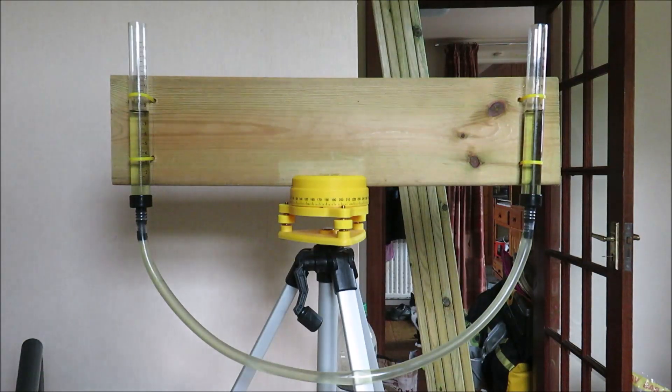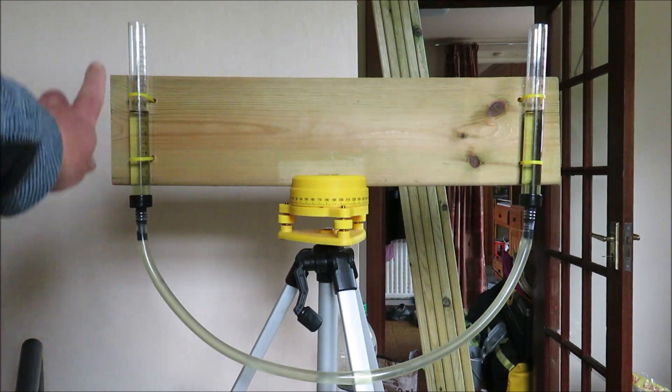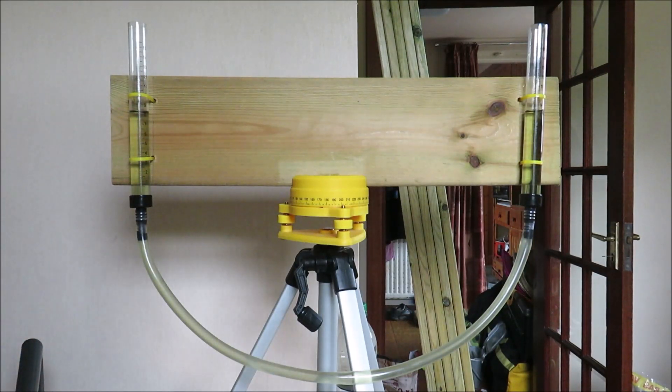Now this is a well known observation and the gravity deniers, flat earthers will claim that this is proof of water finding its own level, therefore proof of a flat earth. The question is why? Why did the water on this side rise upwards when I released the clip?